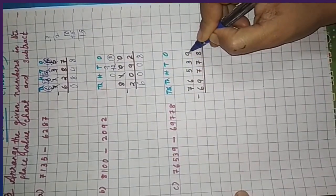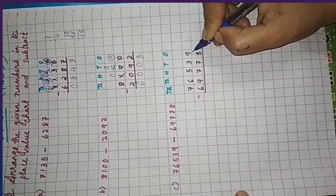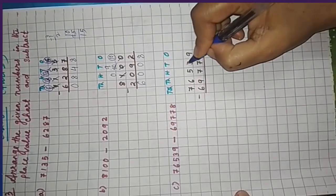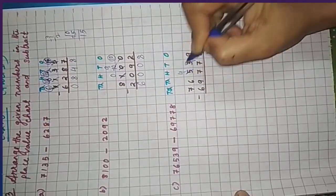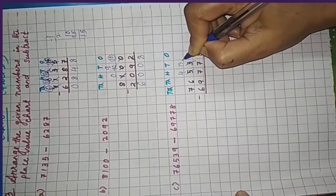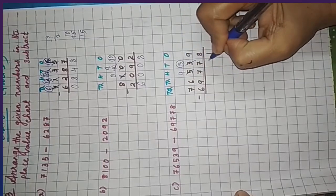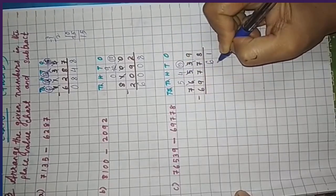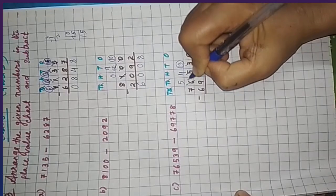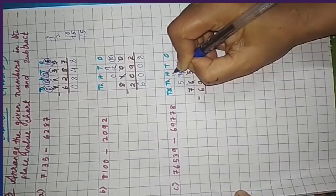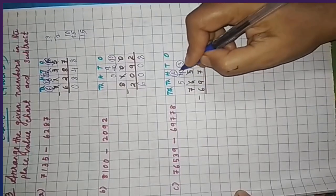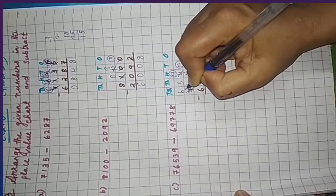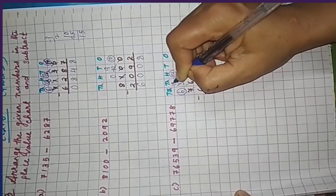9 ones minus 8 ones — 9 is bigger, so no borrowing needed: 9 minus 8 is 1. But 3 minus 7 is not possible, so 3 borrows from 5: 5 minus 1 is 4, and it becomes 13. 13 minus 7 is 6. 4 minus 7 is not possible, so borrow from thousands: 6 minus 1 is 5, and it becomes 14. 14 minus 7 is 7. 5 minus 9 is not possible, so borrow again: 7 minus 1 is 6, and 1 is added here.